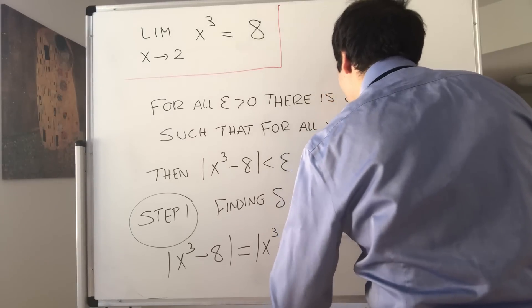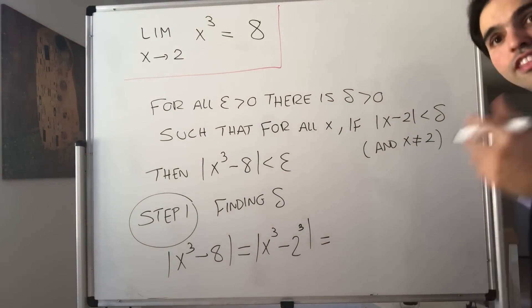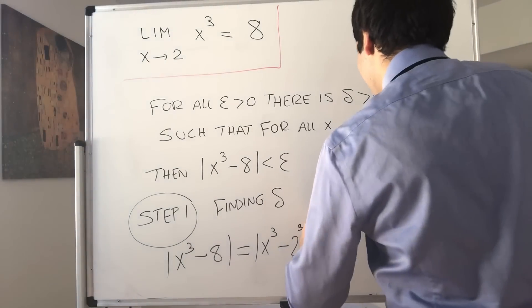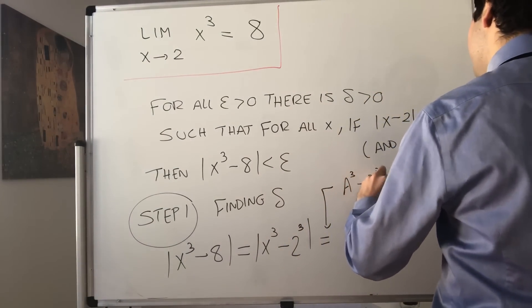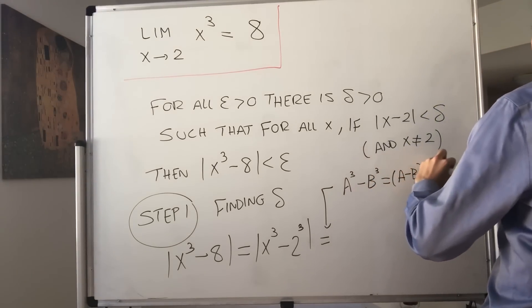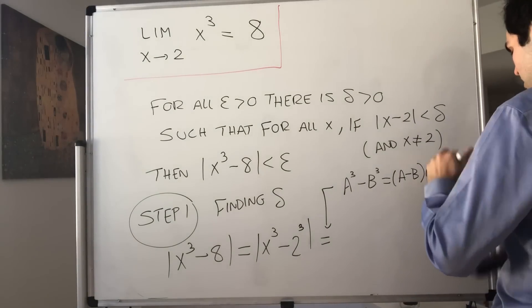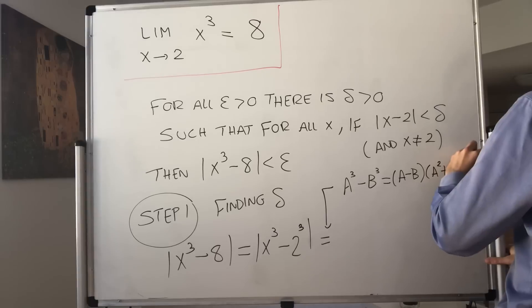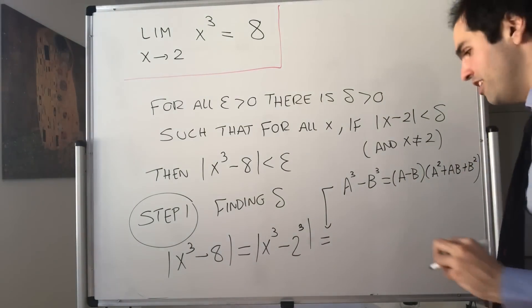What we have here is a difference of cubes. For this, we need to use a mean algebra formula, which is a cubed minus b cubed equals a minus b times a squared plus ab plus b squared.